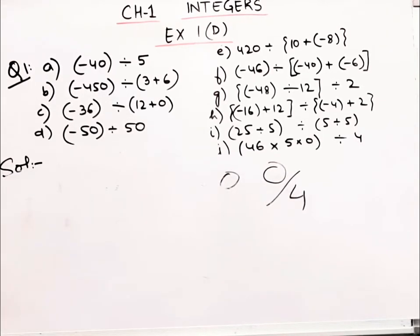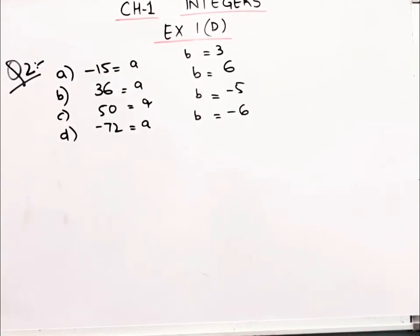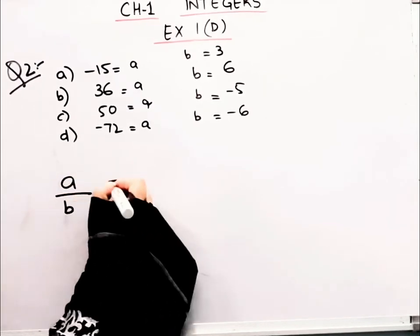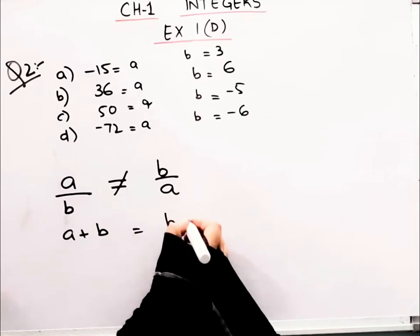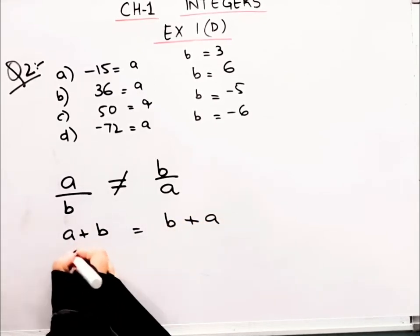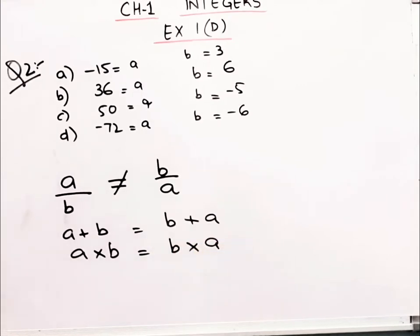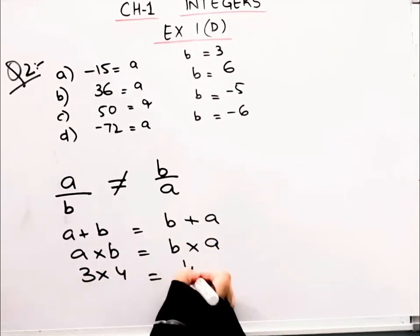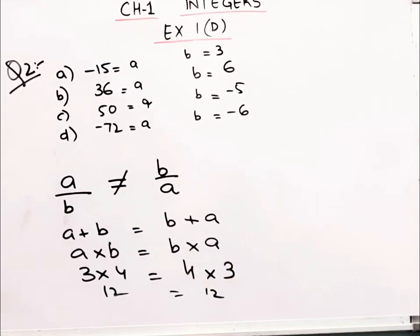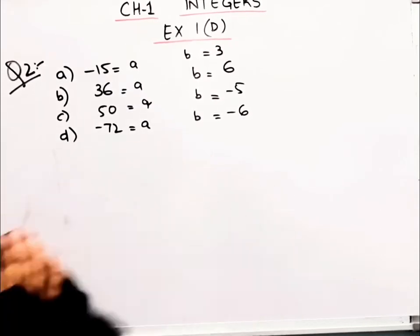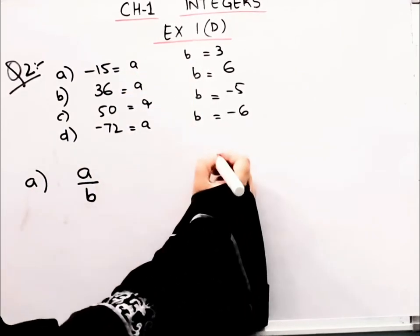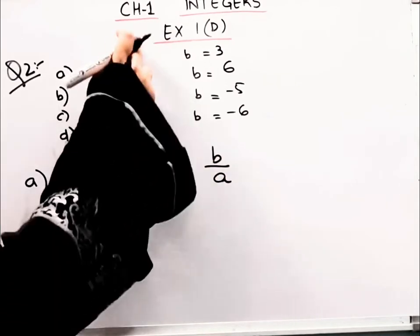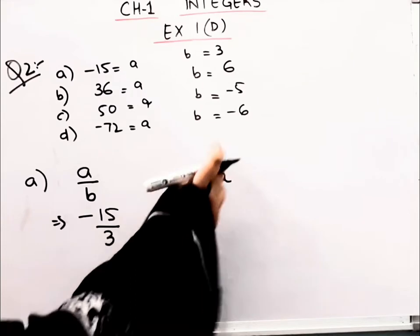Now let's do the second question. We have to verify that a divided by b is not equal to b divided by a. We know that a plus b equals b plus a, the commutative property. We also know a into b equals b into a, just like 3 into 4 equals 4 into 3, both give answer 12. But look, in the case of division, this doesn't happen.